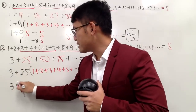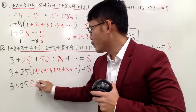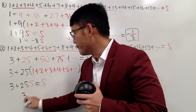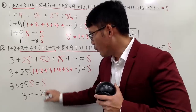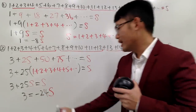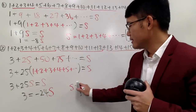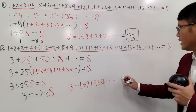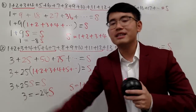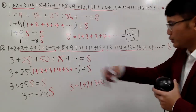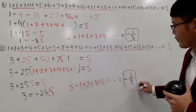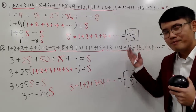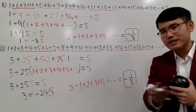So we have 3 plus 25S equals S. Subtracting 25S from both sides gives 3 equals negative 24S. Dividing both sides by negative 24 and reducing the fraction, s equals negative 1 over 8. So, what do you guys think — leave a comment below and let me know: is it negative 1 over 8, or is it negative 1 over 12?